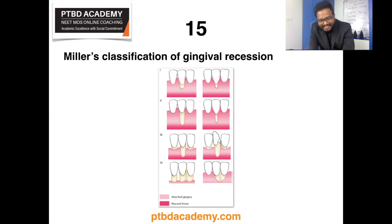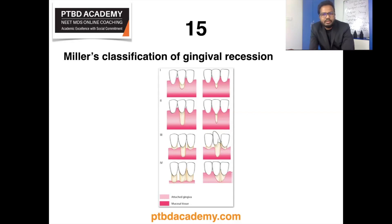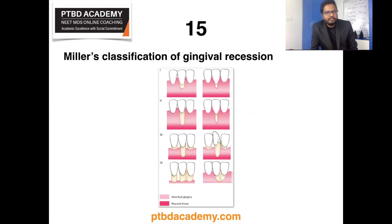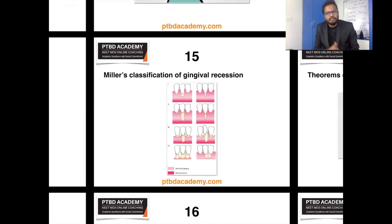Class 3: marginal tissue recession extending to or beyond the mucogingival junction; bone or soft tissue loss in the interdental area is present, and malpositioning of teeth prevents achieving 100% root coverage — only partial root coverage can be anticipated. The amount of root coverage can be determined presurgically using a periodontal probe. Class 4: marginal tissue recession extending to or beyond the mucogingival junction; bone or soft tissue loss and/or malpositioning of teeth is so severe that root coverage cannot be anticipated. Whenever you go through any classification, go through the respective illustrations for easier understanding and remembering.